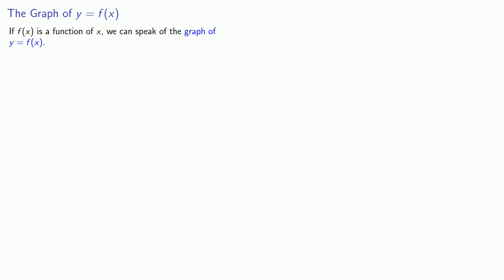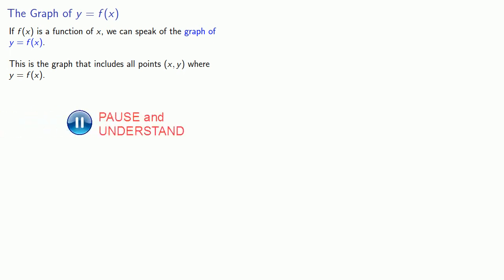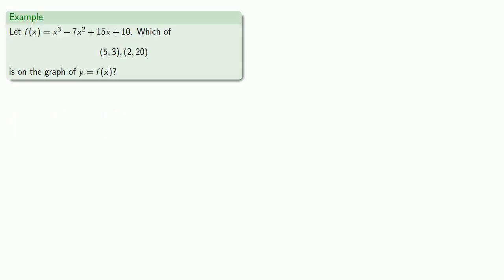Just like when we graphed equations, what we mean by this is the graph that consists of all points (x, y) where y equals f of x. With the exception of the use of function notation, this is really the same thing we did when we looked at graphs the first time. So let f of x be some function of x. We can determine which points are on the graph of y equals f of x. The underlying concept remains the same.